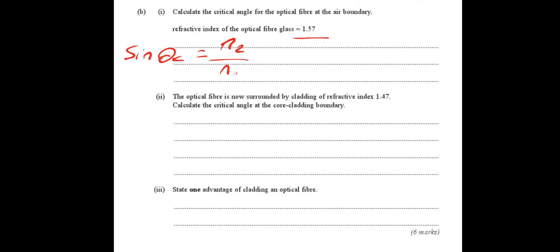So we will be going from glass to air. So theta c will be equal to the inverse sine N2 over N1. N2 being the air. So 1 over 1.57. And that gives us a critical angle equal to 39.6 degrees or 40 degrees.